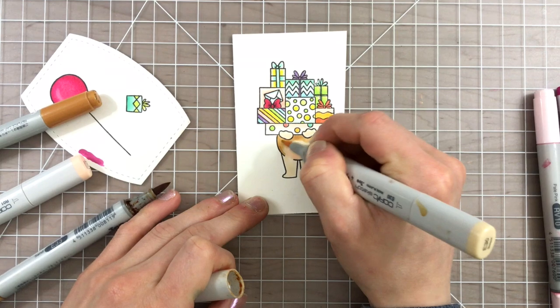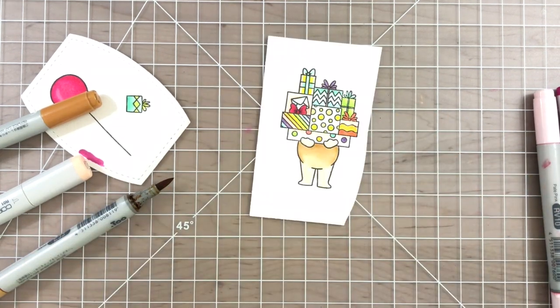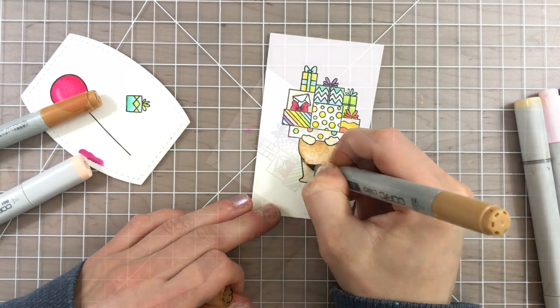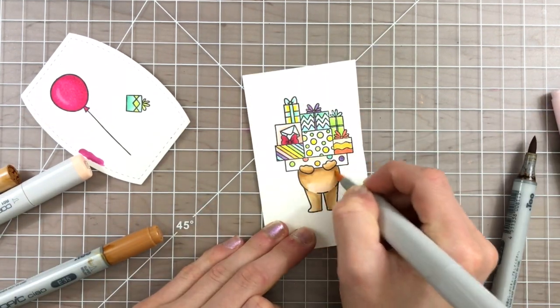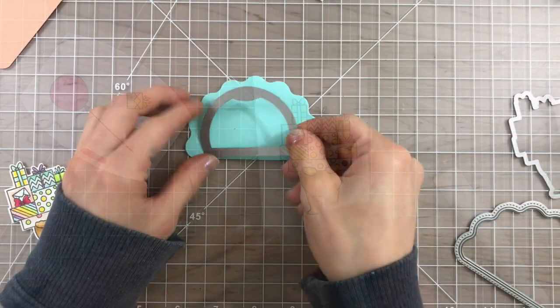I also added a little bit of a warm R01 color to his belly to give him a little bit of a pinkish tone and then once the coloring of the bear and the balloons and the presents were all done I did cut all of these images out with the coordinating dies.